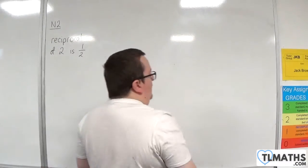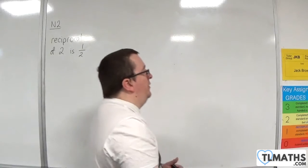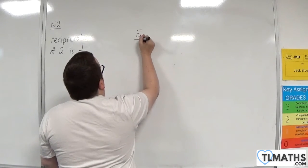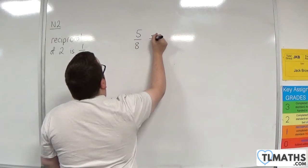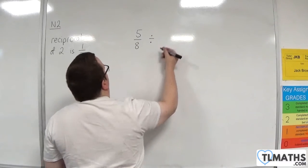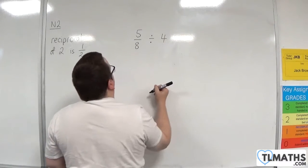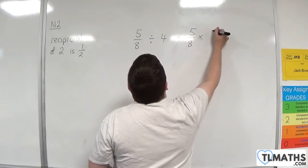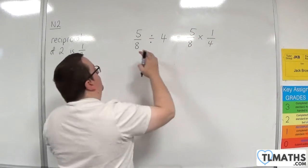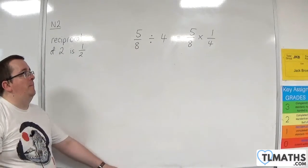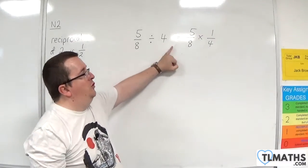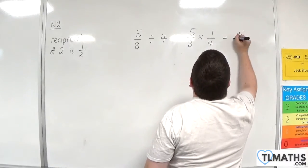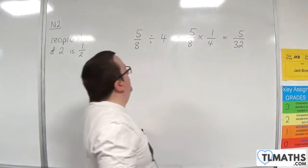Let's say I've got another example: 5 eighths, and I want to divide that by 4. Well, I know that dividing by 4 is the same as multiplying by a quarter. So I am instead going to multiply by the reciprocal of 4, which is one quarter. And so we get 5 over 32, and that's my answer.